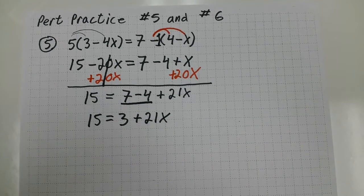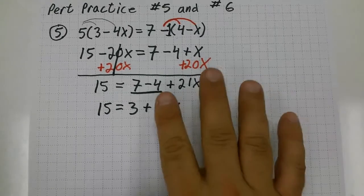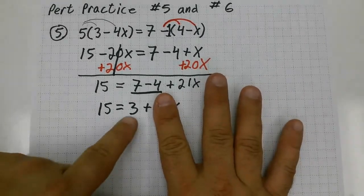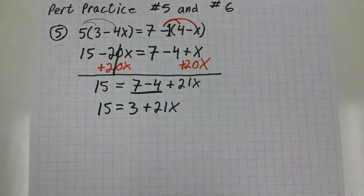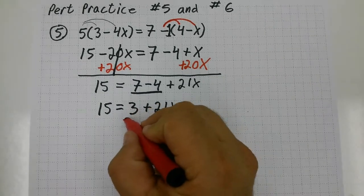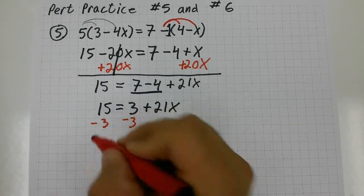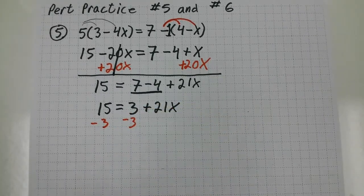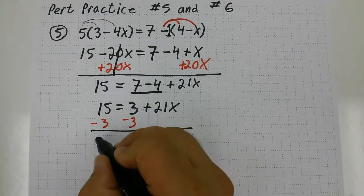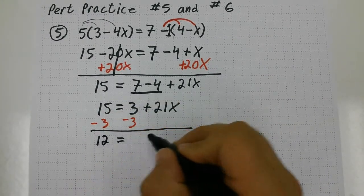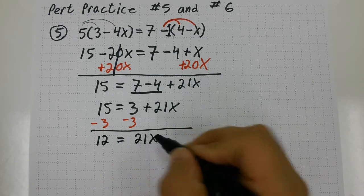Some people like to call this a cover-up method. I'm going to cover up this 21x and do the opposite of plus 3. So the opposite of plus 3 is subtract 3 from both sides of the equation. That's going to give me 12 equals 21x.